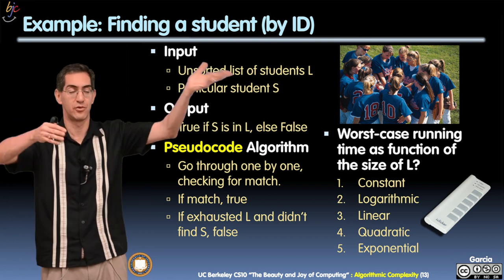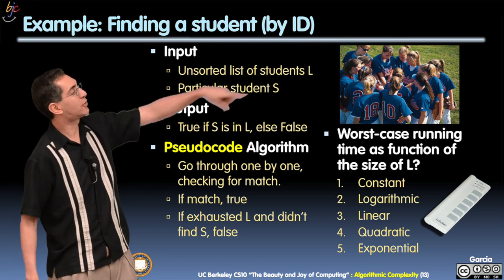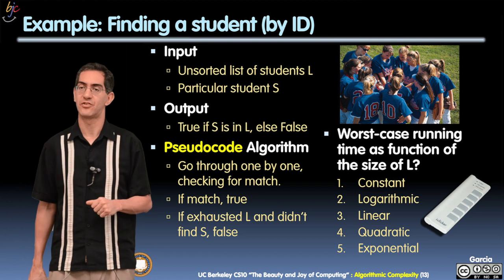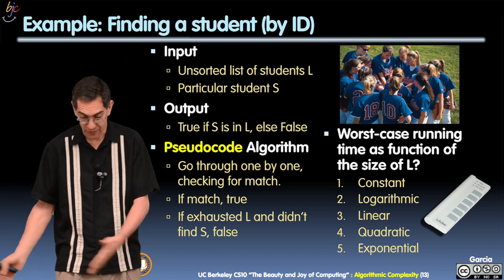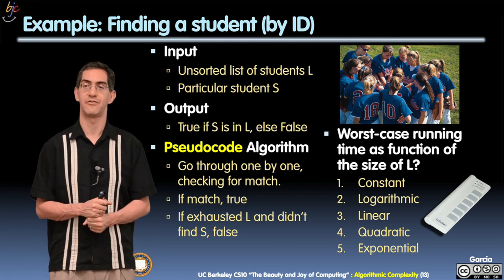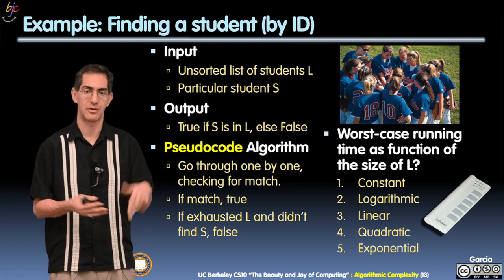N is the worst case number of things you have to look at. And the output is yes or no, true or false. So the pseudocode algorithm is go through one by one, checking for a match. If match, true. Otherwise, if exhausted means you've gone through all of them, and you didn't find the student, you say false. That pseudocode makes sense? That's what we've got.